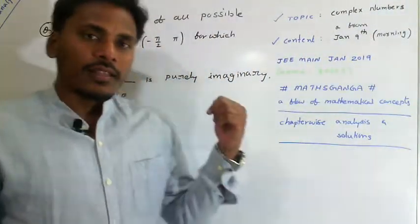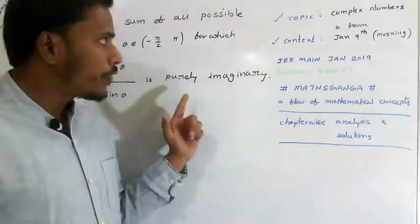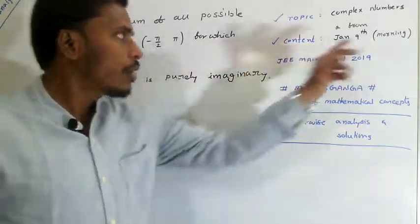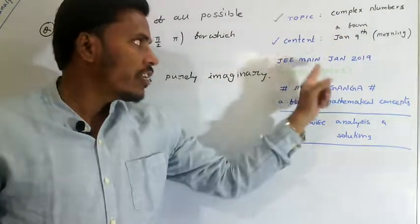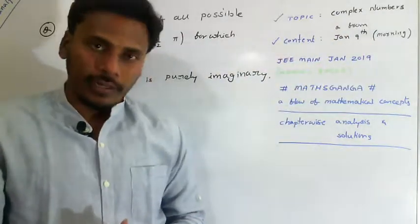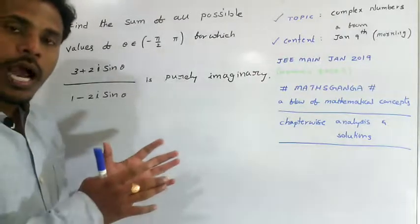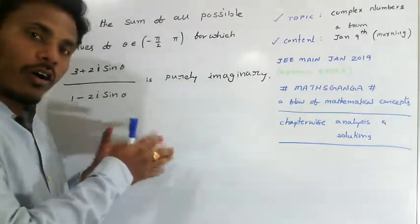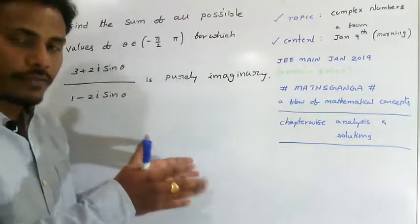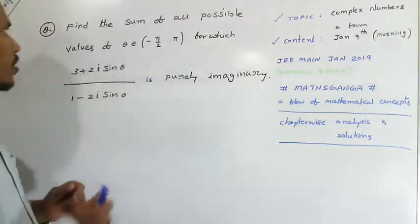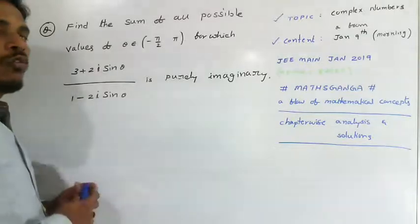Hi friends, this is a question from complex numbers which was asked in the morning session of JEE May January 2019. It is a very easy question and the sub-content of complex numbers involved is the basic definition of complex numbers. The question is: we need to find the sum of all possible values of theta.